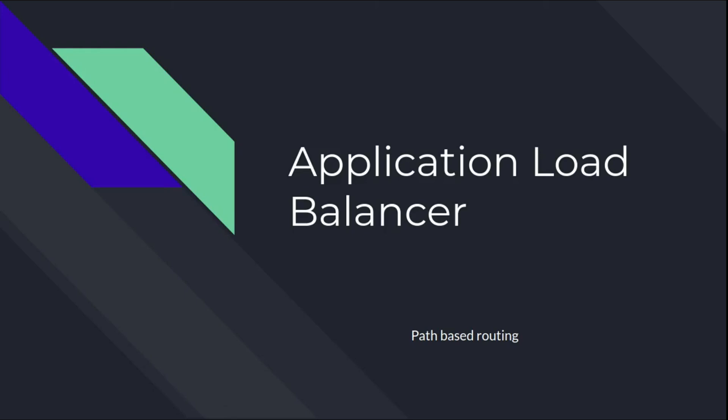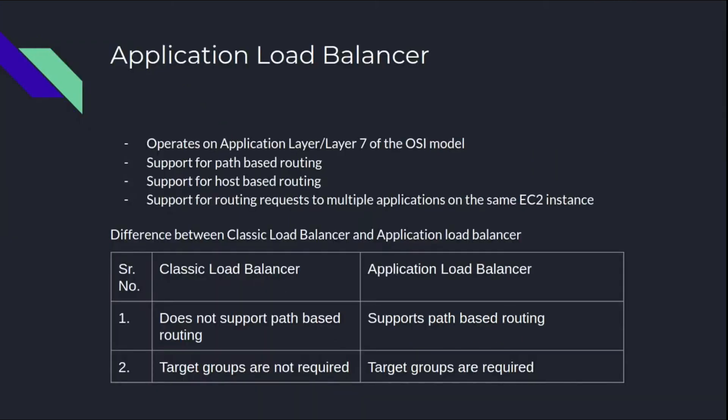Application load balancer operates on the application layer, or layer 7 of the OSI model. It supports path-based routing, meaning we can write configuration rules to route based upon the path in your request. It also supports host-based routing, where rules route based upon the host field in the HTTP header, and it supports routing requests to multiple applications on the same EC2 instance.